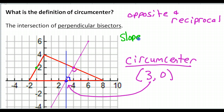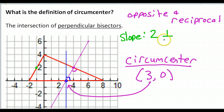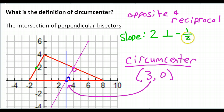Looking at this line over here, the slope is up 2 over 1. So the slope is 2, and I could think of it as 2 over 1. What will be the slope of a perpendicular line? A perpendicular line will have slope negative 1 half — opposite in sign, and reciprocal. 2 over 1 becomes 1 over 2. Because I've placed the midpoint, I know I'm going to have a bisector when I draw this line. To make sure it's perpendicular, I have to use a slope of negative 1 half.